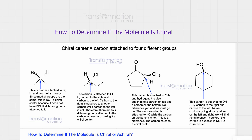Let's look at this carbon. It is attached to hydrogen and chlorine — so far these are different. Then carbon on the left and carbon on the right. But as we go atom by atom to the left and to the right, we will notice a difference. On the right, this carbon is attached to another carbon, and on the left, this carbon is not. Therefore this is a chiral center and we will put an asterisk next to it.